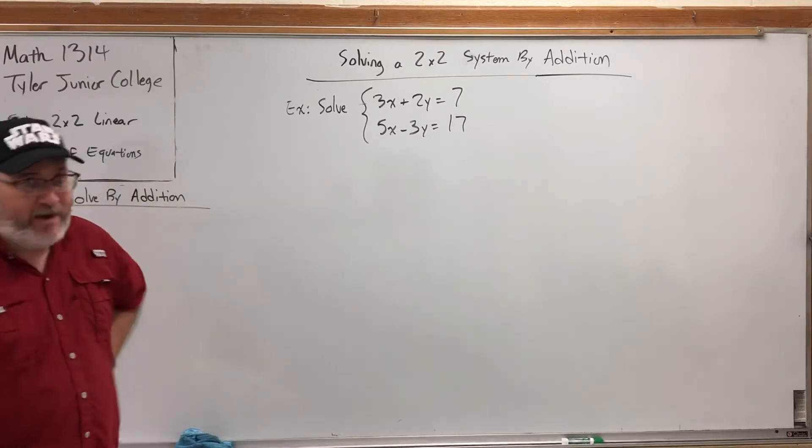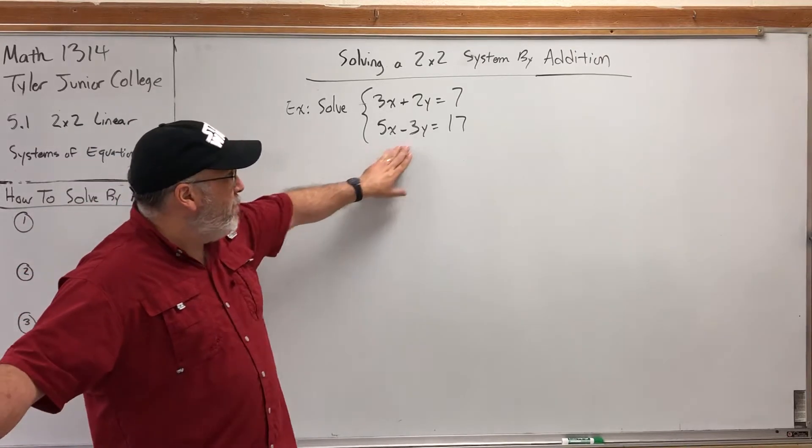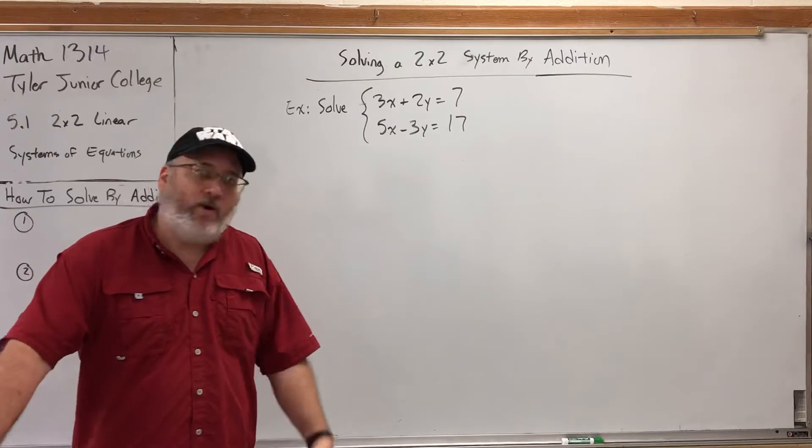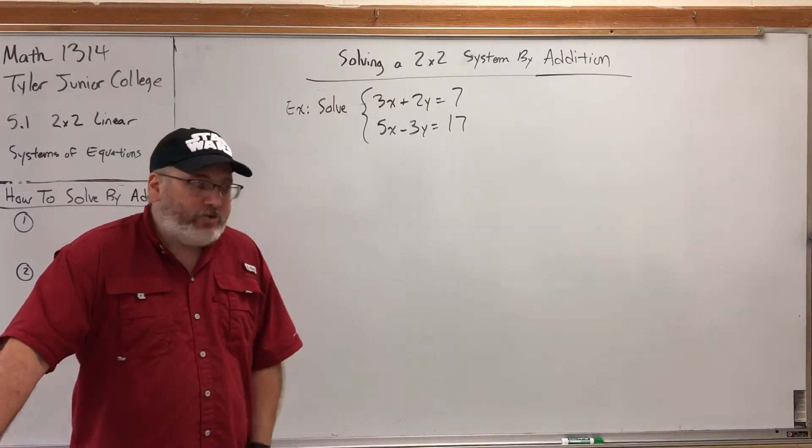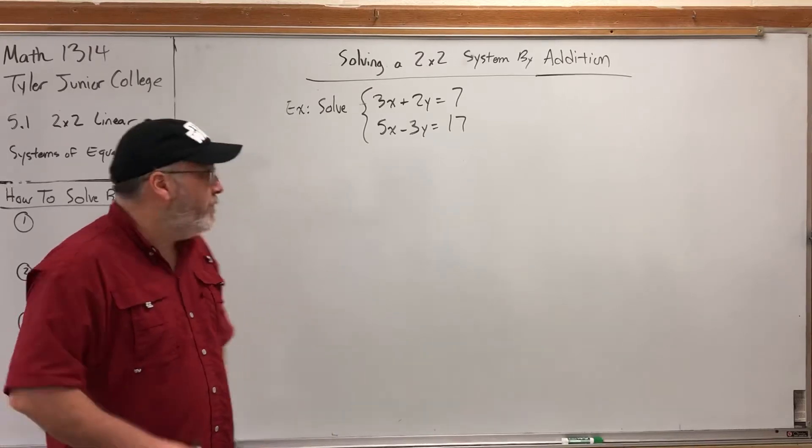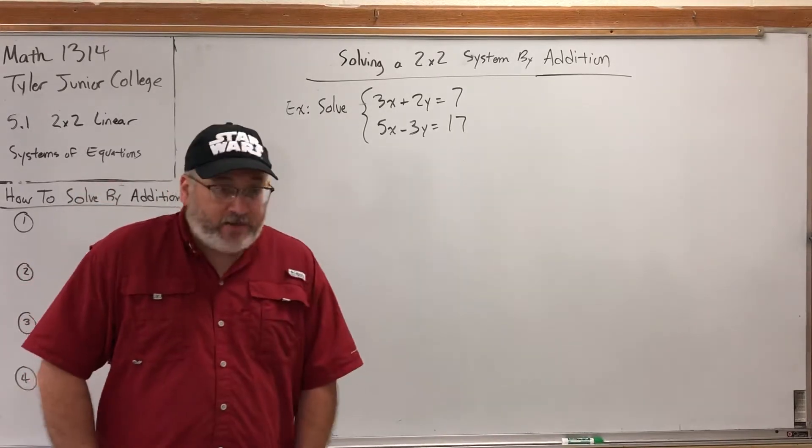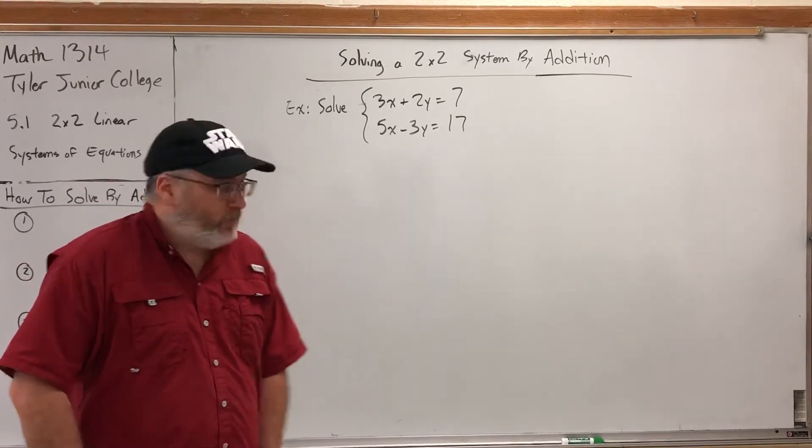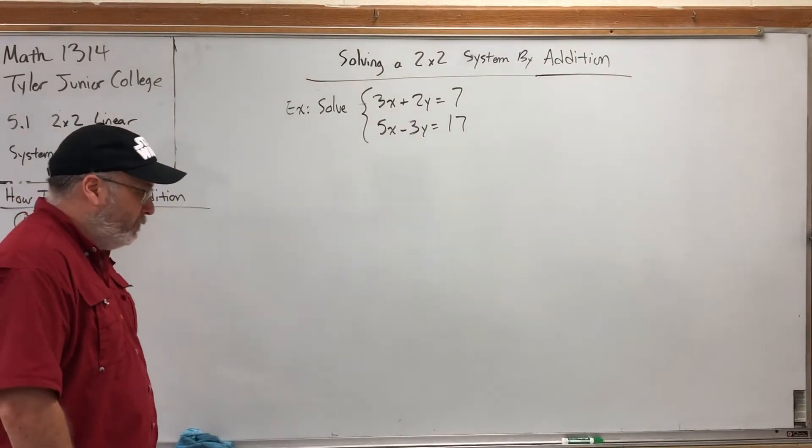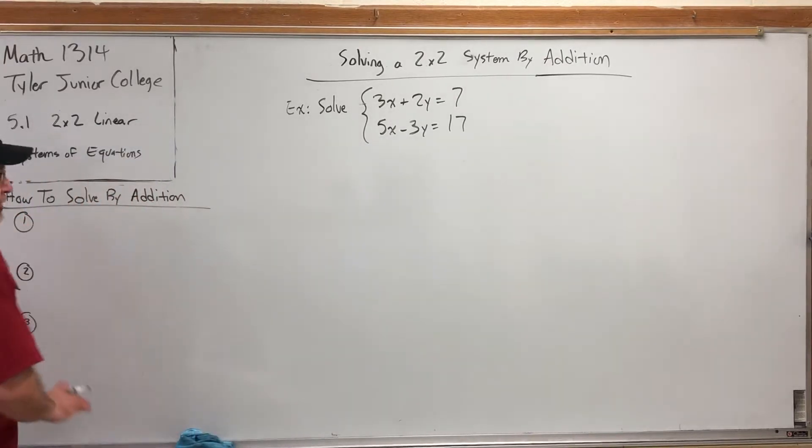Now what? Should we add them now? Well, we could, but if we add them now, we'll get 8x minus 1y equals 24. And I can't solve that for one letter or the other because I still have too many letters. We're still trying to overcome the same obstacle of too many letters at the same time. But this time, instead of fixing it by substitution, we're fixing it by setting up opposites that will cancel. Well, we haven't actually set up opposites yet, but we're about to. So without further ado, here's how to solve by addition in general.